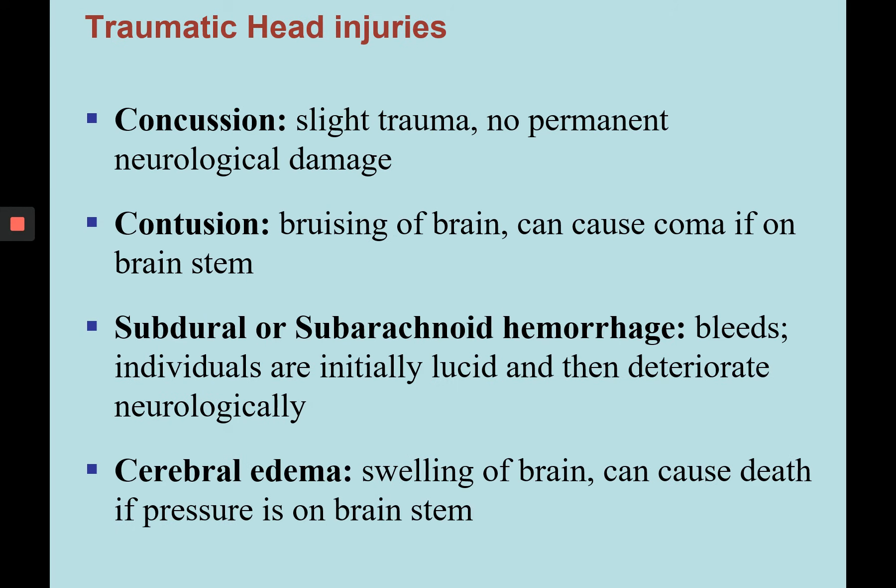Next we want to acknowledge some traumatic head injuries: concussion, contusion, subdural or subarachnoid hemorrhage, and cerebral edema. A concussion is the least severe — a slight trauma with no permanent neurological damage. A contusion actually causes bruising of the brain when it hits the skull, and can cause a coma if the contusion occurs on the brain stem. A subdural or subarachnoid hemorrhage involves bleeding in the subdural or subarachnoid space, and if it pushes on the brain stem, it can cause neurological deterioration.